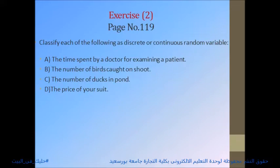Number B: the number of pairs of coats on a shirt — since it is a 'number of,' it is countable with gaps, so it is a discrete random variable. Number C: the number of ducks in a pond — also a 'number of,' so discrete random variable. Number D: the price of a suit — prices can take many values within an interval, so it is a continuous random variable.